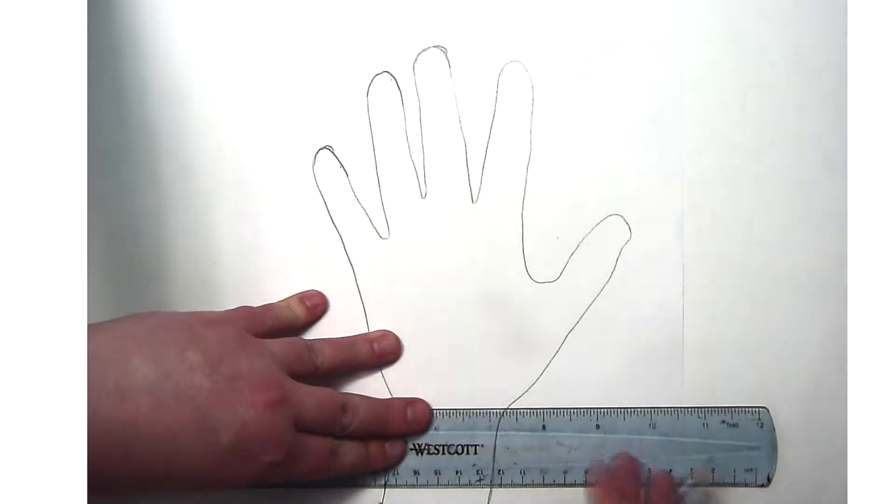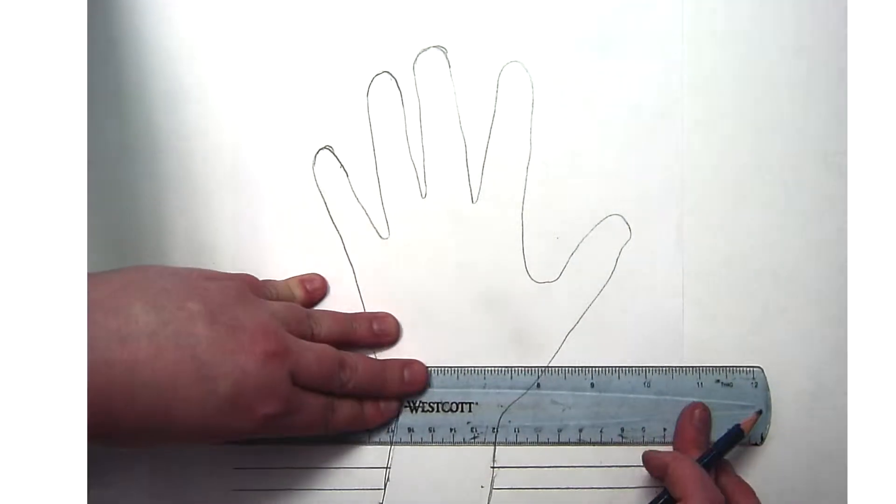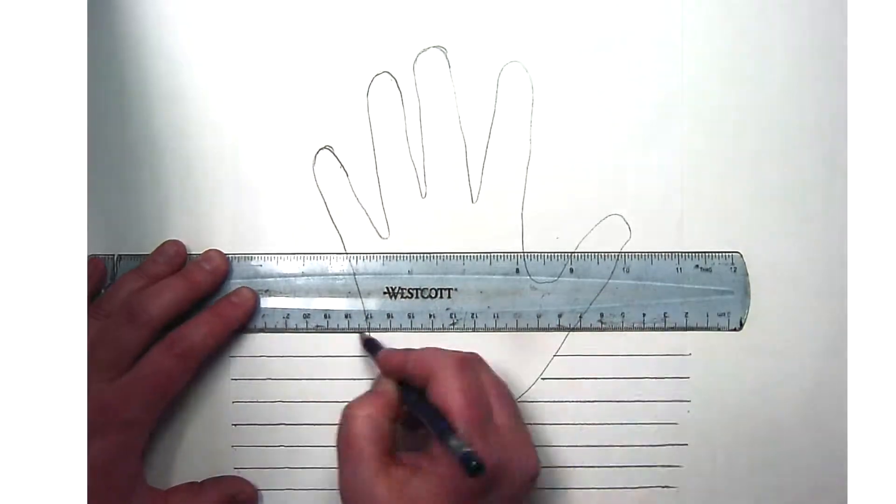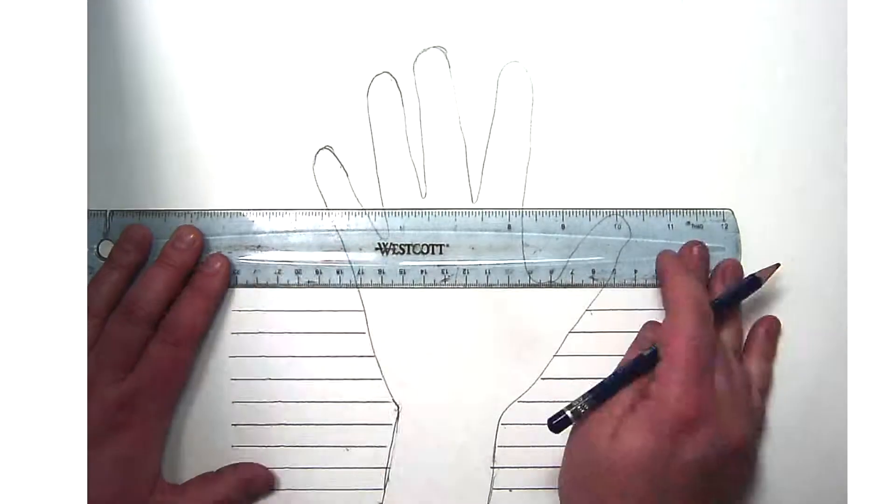Next, I take my ruler and I'm drawing horizontal lines all the way across my paper, but I'm skipping the areas where the hand is, so the inner areas of the hand drawing.